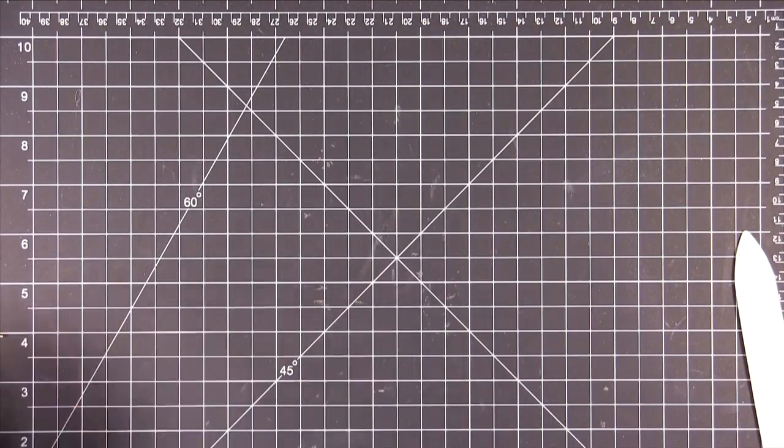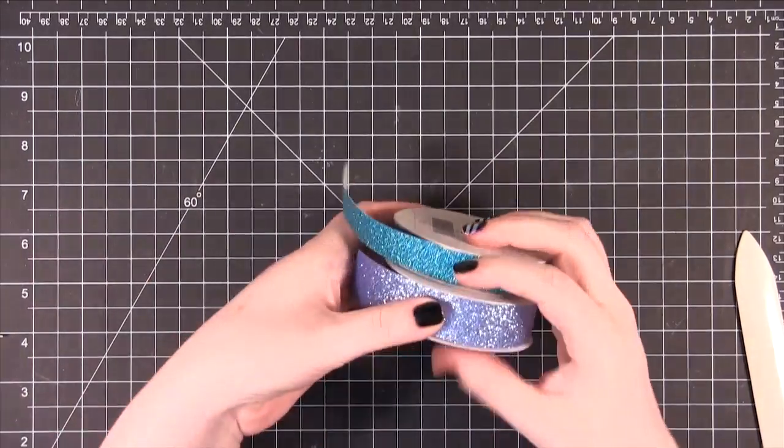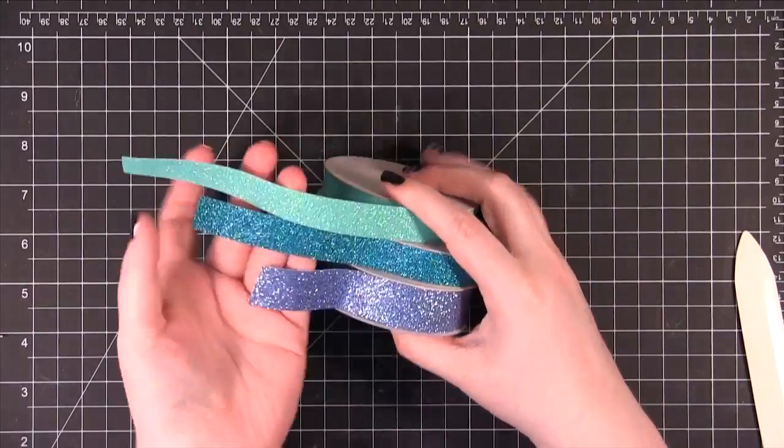Alright, and then I'm doing something kind of different today. I have this glitter tape from American Crafts. I have it in three colors that I thought would look really cool together, blue and green.